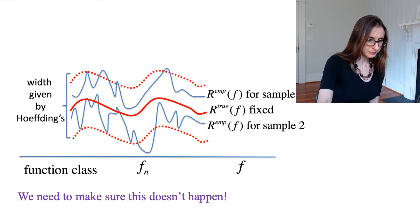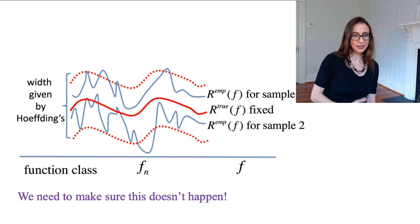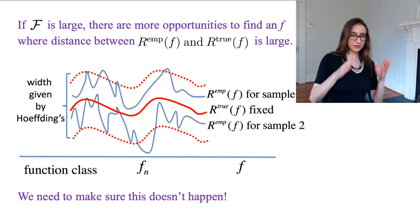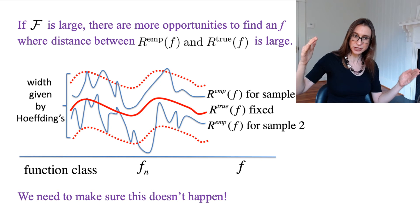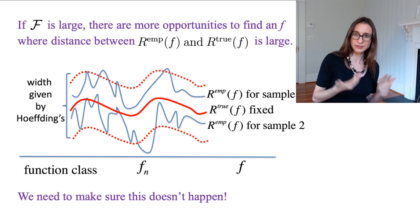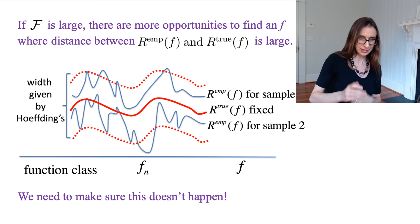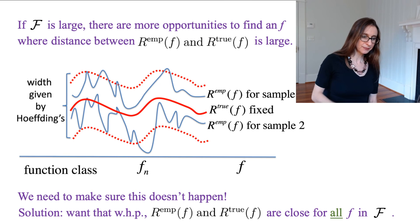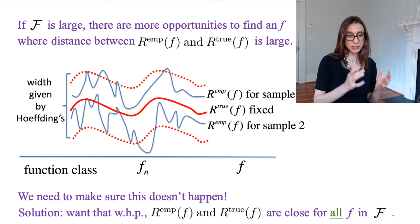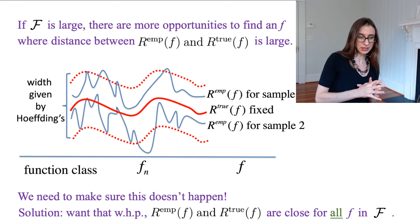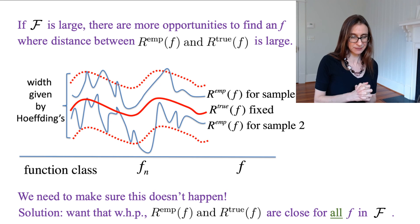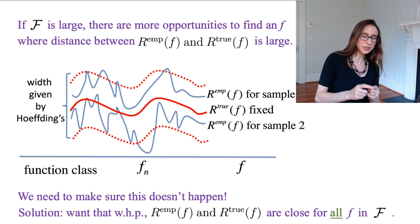So we really, really need to make sure that this kind of thing doesn't happen. And in fact, if our function class is really large, like if you have a huge number of functions, that just leads to more opportunities to find a function f where the distance between the empirical risk and the true risk is large. That's bad. So what we're going to do is create a bound that says that with high probability, the empirical risk and true risk are close for all functions in the class so that the thing that I showed you up there doesn't actually happen. In other words, if a data set is good, it's good for all the functions in the class and it always stays within that band.